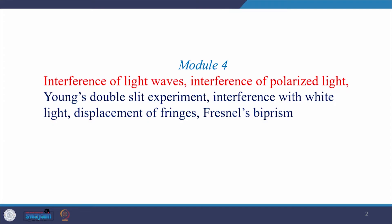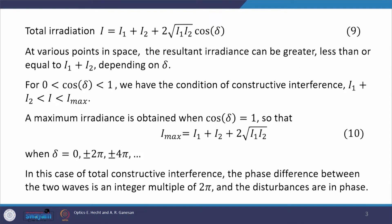Hello everyone, welcome back to my class. We are in module 4, which we started in the last lecture, and we are learning interference. In the last lecture we talked about interference of light and also saw the effect of polarization on the visibility of the interference. Today we will start from where we ended — we calculated the expression of total irradiance.